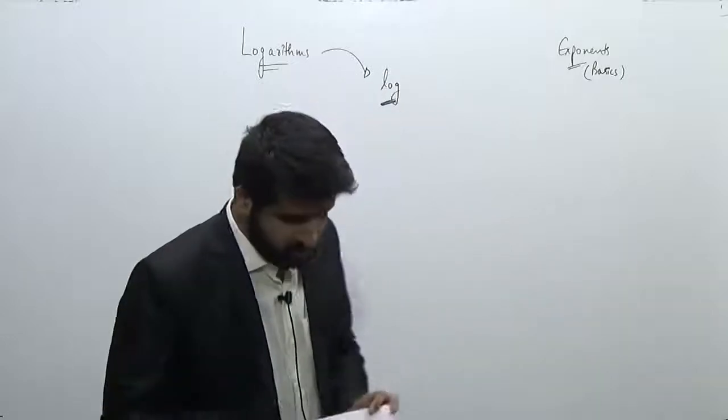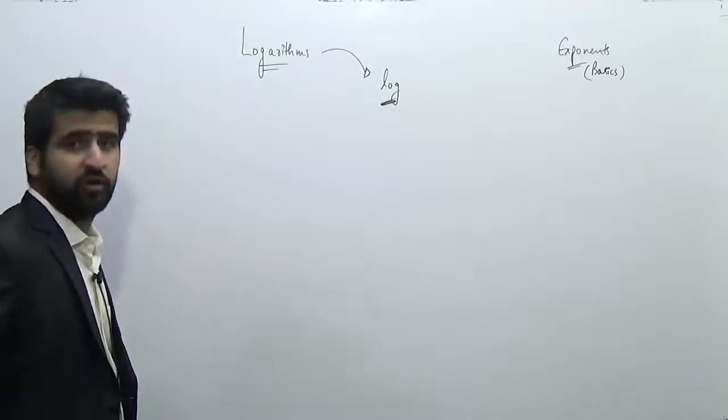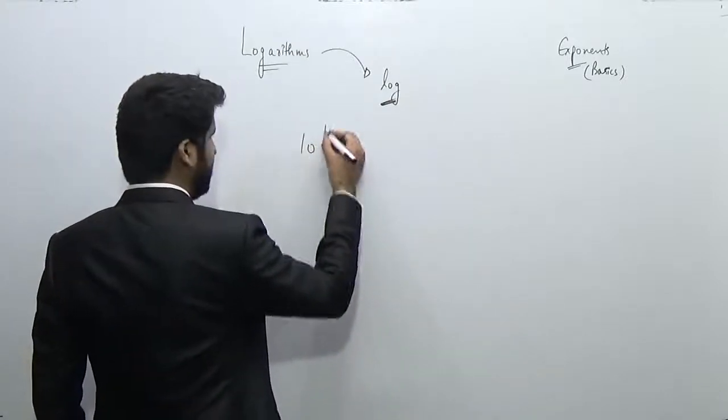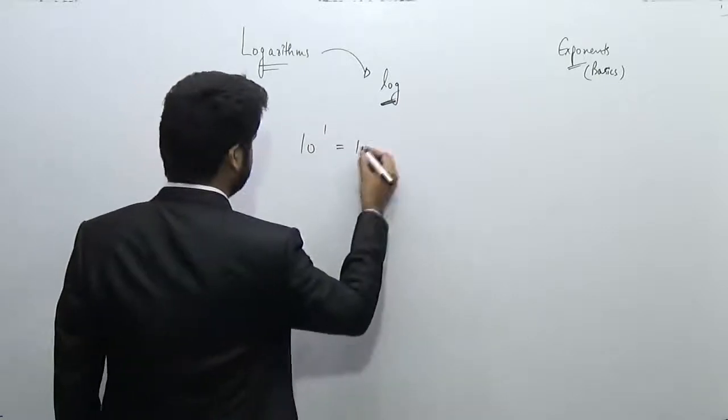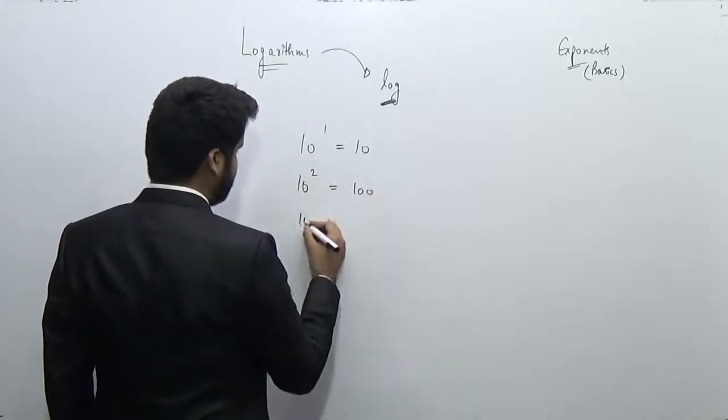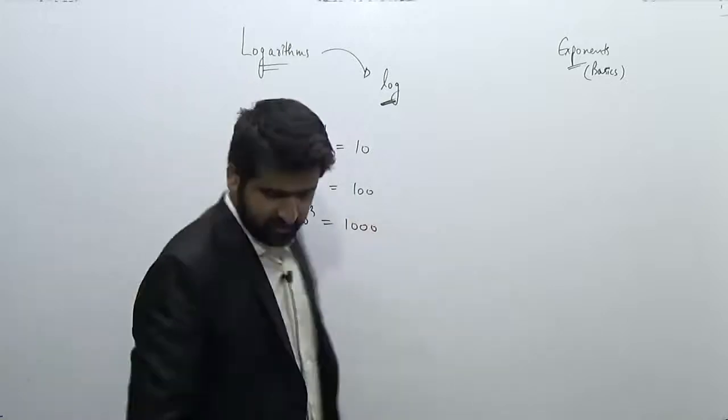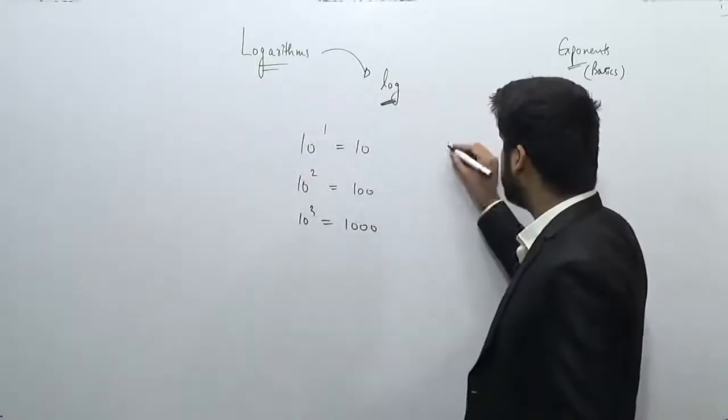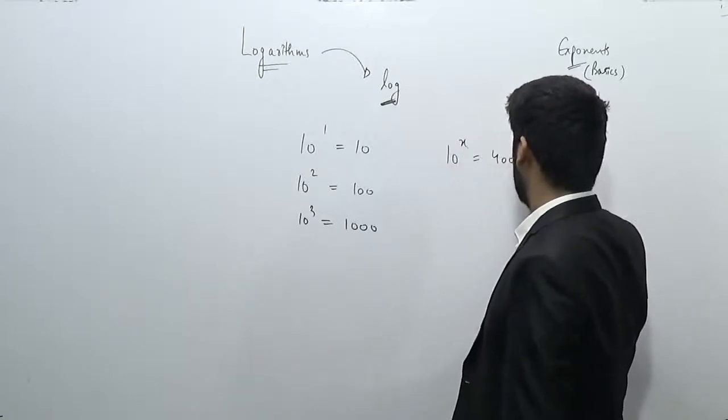First we'll understand what is the need of the logarithm. Let's see, we know that in exponents 10 to the power 1 is equal to 10, 10 to the power 2 is equal to 100, similarly 10 to the power 3 is equal to 1000, and you can complete this table by yourself.